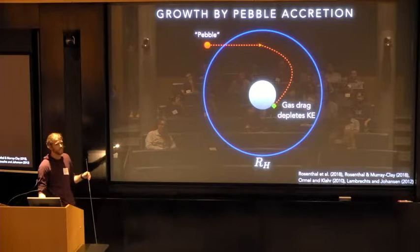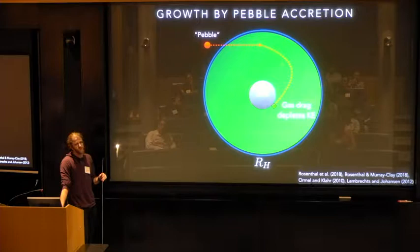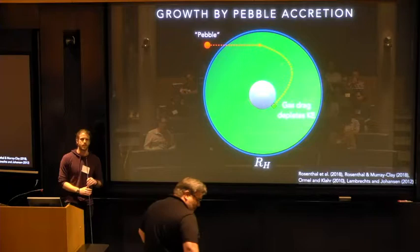In fact, what you can end up with in some cases is that cores can accrete pebbles over the entirety of their hill radii, which is in contrast to the accretion of planetesimals, where usually the best you're going to do is impact parameters of about the geometric mean of the planet's radius and the hill radius.